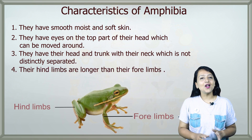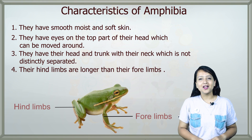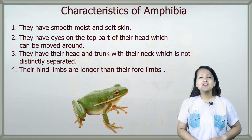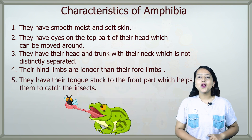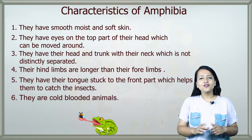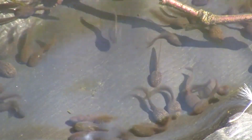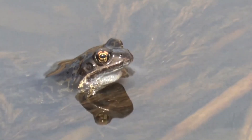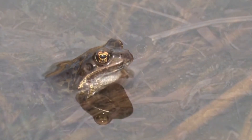Their hind limbs are longer than their fore limbs, which help them to jump. Their hind limbs have webbed feet which help them to swim in water. They have a tongue stuck to the front part of the mouth which helps them to catch insects. They are cold blooded animals. Frogs fall in this class. Young frogs are called tadpoles. They live only in water in the tadpole stage and breathe through gills. Frogs breathe with skin when they are in water and with lungs when they are on land. They lay eggs in water. Besides frogs, toads and salamanders also fall into this class.